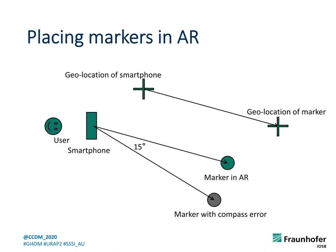Here we see the problem with the magnetic compass. The compass is required to orient the virtual coordinate system correctly. If the compass is off by only a few degrees, it will result in a large error. The compass is very sensitive and reacts to the magnetic field of internal components and the magnetic field of the Earth that depends on your location. That's why you need to calibrate the compass each time you are using it.